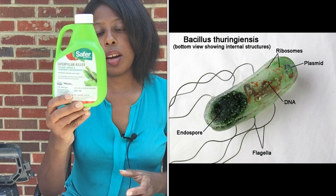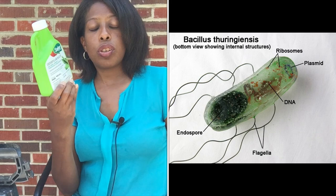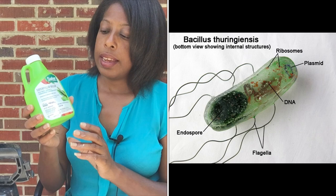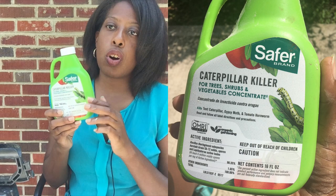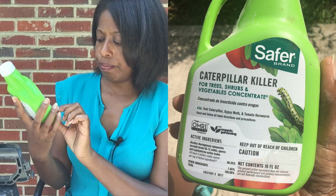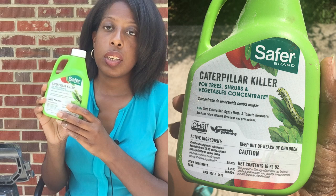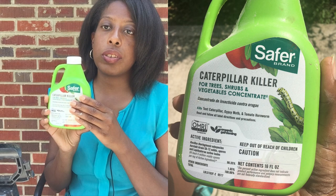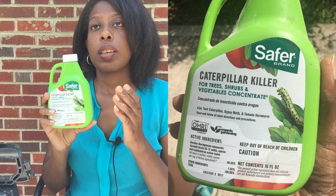Once you get them off your plants, I'm going to suggest that you spray a product on them — it's a bacteria, a biological control. The bacteria is called Bacillus thuringiensis, or Bt for short. There are multiple different kinds that target specific insects, but this particular one is Bt kurstaki, and it specifically targets caterpillars. You can spray this not just on your brassica plants but on other plants that experience caterpillar damage.